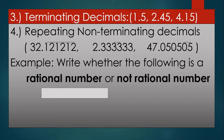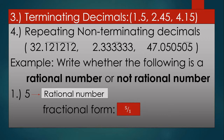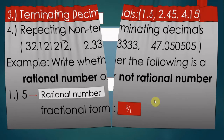Let's look at some examples. Write whether the following is a rational number or not a rational number. Number one: Is 5 a rational number? Can we change 5 into a fraction? Yes — therefore 5 is a rational number. The fractional form of 5 is 5 over 1, where 5 is the numerator and 1 is the denominator.